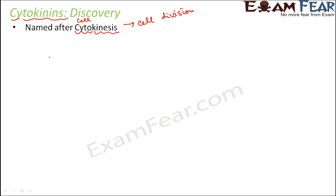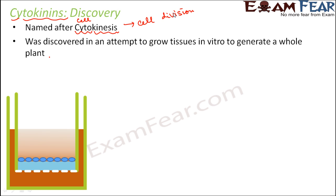Scientists were trying to grow tissues in vitro to generate a whole plant, but that was not becoming possible. They tried many different things — they added all the minerals and everything. They could grow some tissues, but those tissues lasted only for some time and then they could not get a plant. The tissues had to survive for a longer time to give rise to a plant, but that never happened.